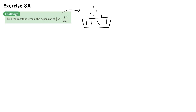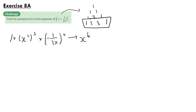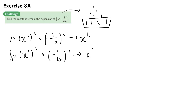Our first term will be 1 times x squared cubed, then minus 1 over 2x to the power of 0, which is just 1. So this term will have x to the power of 6 in it, which is not a constant term. Our next term will be 3 times x squared squared times minus 1 over 2x to the power of 1. And the power here will be x cubed, which is also not a constant term.